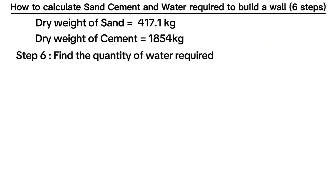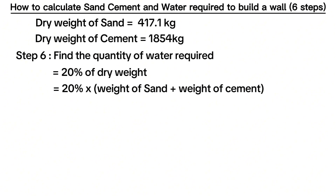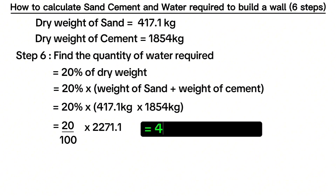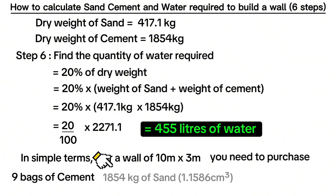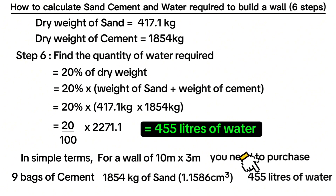The sixth step, which is the last step, is to find out the quantity of water needed to mix sand and cement. Quantity of water required is equal to 20% of the dry weight, which is equal to 20% of weight of sand plus weight of cement. When we feed in our figures, we get 455 liters of water. Therefore, in simple terms, when you have a wall of 10 meters along the length and 3 meters along its height, you need to purchase 9 bags of cement, 1,854 kilograms of dry sand — or 1.1586 cubic meters of sand — and 455 liters of water.